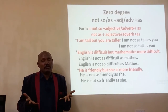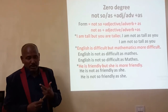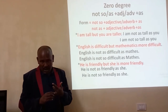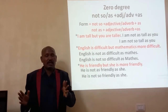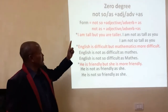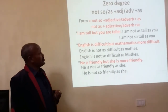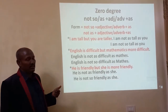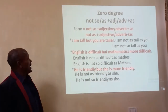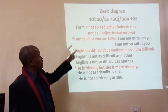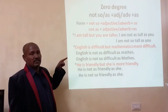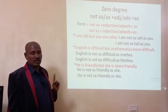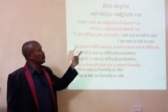The form of zero degree is different. One form is: not as plus adjective or adverb plus as. Another form is: not so plus adjective or adverb plus as. Look at the example: I am tall but you are taller — I and you are at different heights. So we say: I am not as tall as you, or I am not so tall as you. That means you are taller than me.